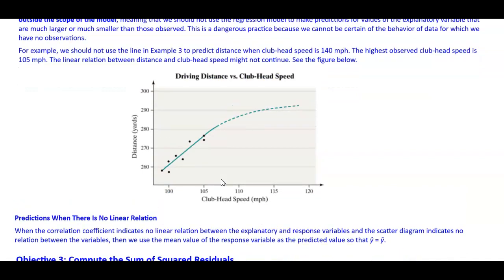Now predictions when there is no linear relation. When the correlation coefficient indicates no linear relation between the explanatory and response variables and the scatter diagram indicates no relation between the variables, then we use the mean value of the response variable as the predicted value. So that means y-hat is equal to the mean of the y value.